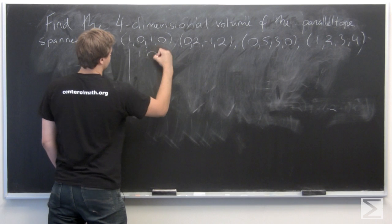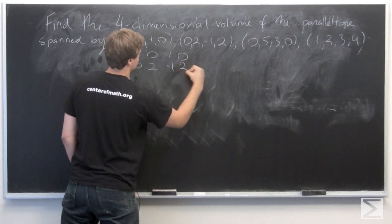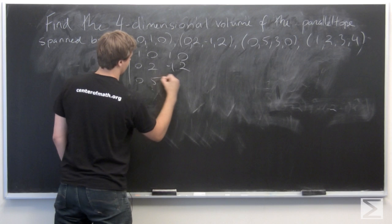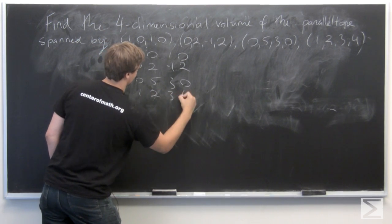So it's going to be the matrix: 1, 0, 1, 0; 0, 2, -1, 2; 0, 5, 3, 0; and 1, 2, 3, 4.